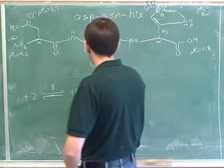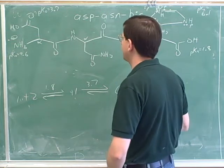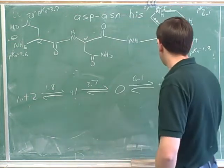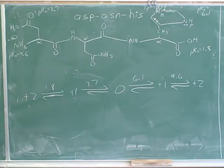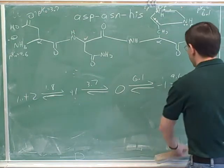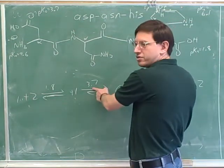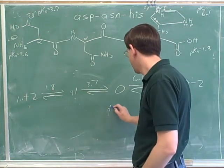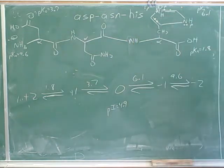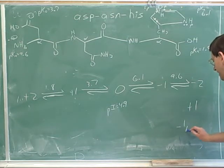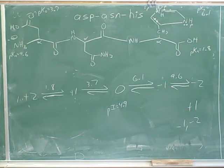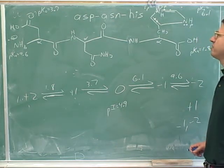The next lowest pKa is 3.7, so our next charge would be zero. The next pKa is 6.1, giving us the plus one form. Above that we put 9.6. The charges going up are minus one and minus two. To find the pI, you average the two pKa values flanking the neutral form. What did you get? 4.9 — good. How would you find the pH at which we get the maximum concentration of the plus one form? Average 1.8 and 3.7. And how do we find the pH at which we have equal concentrations of the minus one and minus two forms? It would be at 9.6.